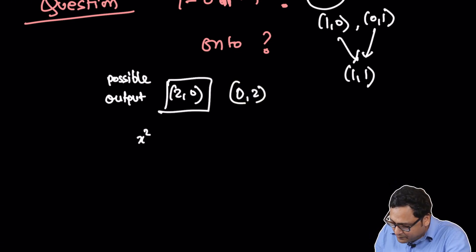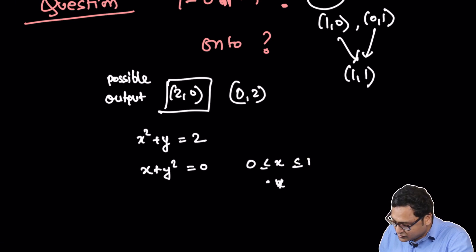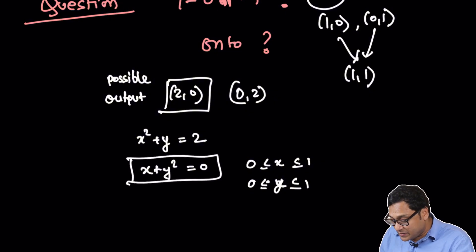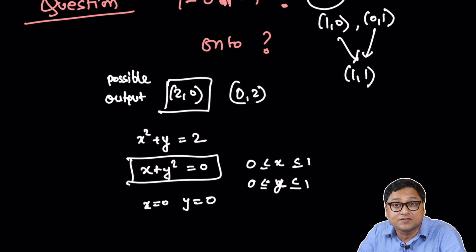If x squared plus y equals 2 and x plus y squared equals 0, and x is between 0 and 1, y is also between 0 and 1, we now know that x plus y squared is 0. That means both x is equal to 0 and y is equal to 0.